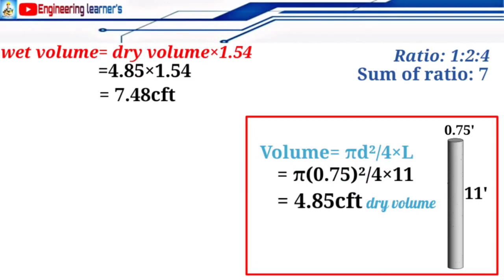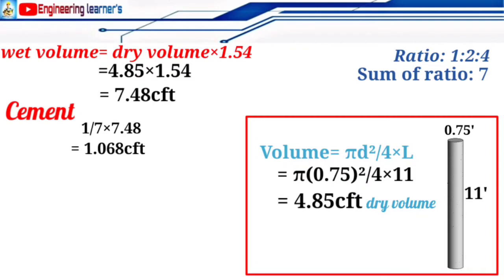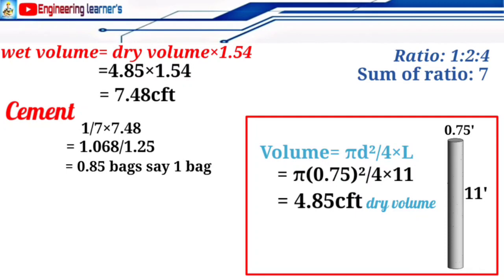With a ratio of 1:2:4, a sum-up ratio of 7, and a volume of 7.48 cubic feet, we first find the cement quantity. Cement = (cement ratio / sum-up ratio) × volume = (1/7) × 7.48 = 1.068 CFT. Since 1 bag of cement equals 1.25 CFT, dividing 1.068 by 1.25 gives 0.85 bags — approximately 1 bag.